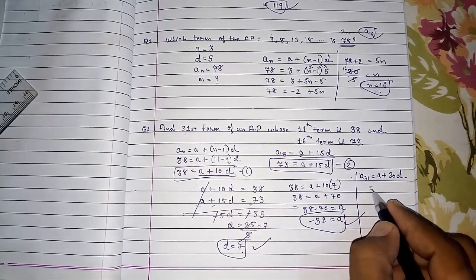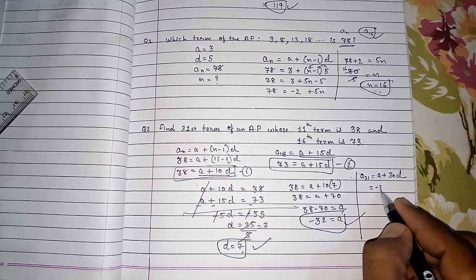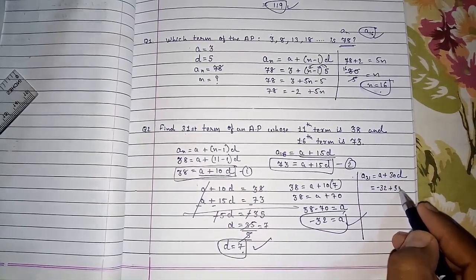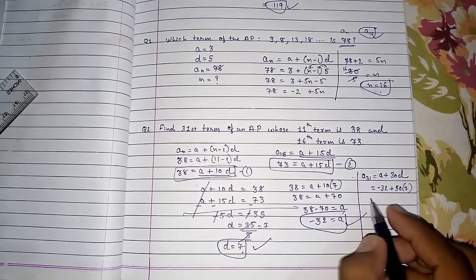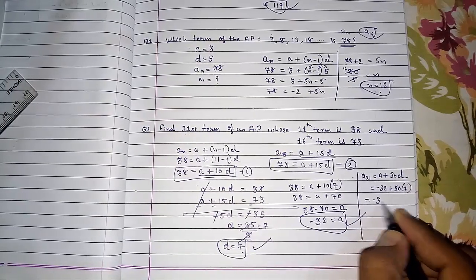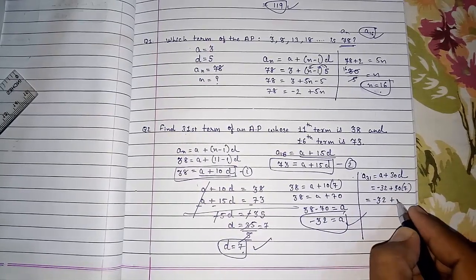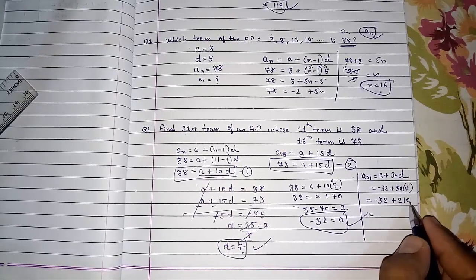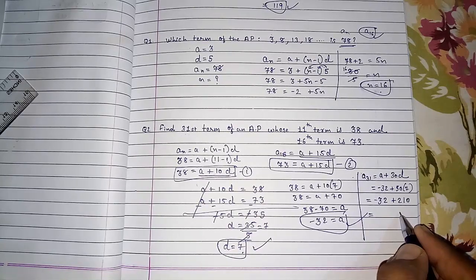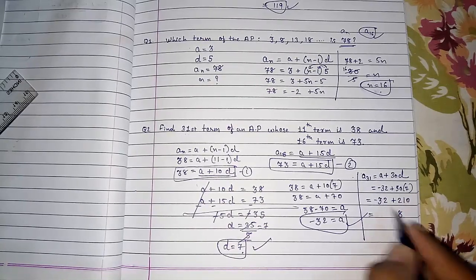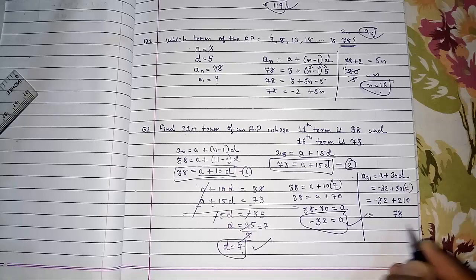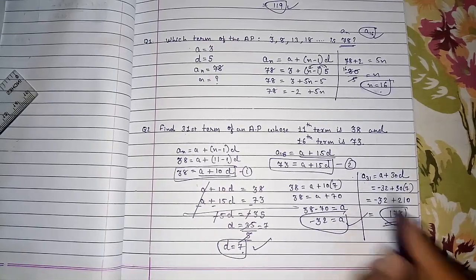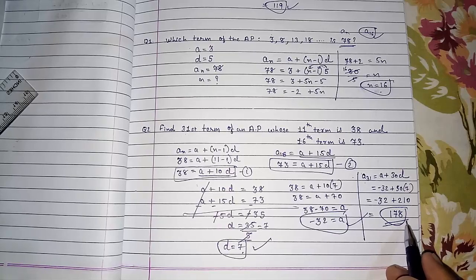A31 equals A plus 30 D. Now you are having A, that is minus 32, plus you are having 30 and D is 7. So minus 32 plus 7 into 30 is 210. Now you have to subtract it. 10 minus 2. So your 31st term will be 178.